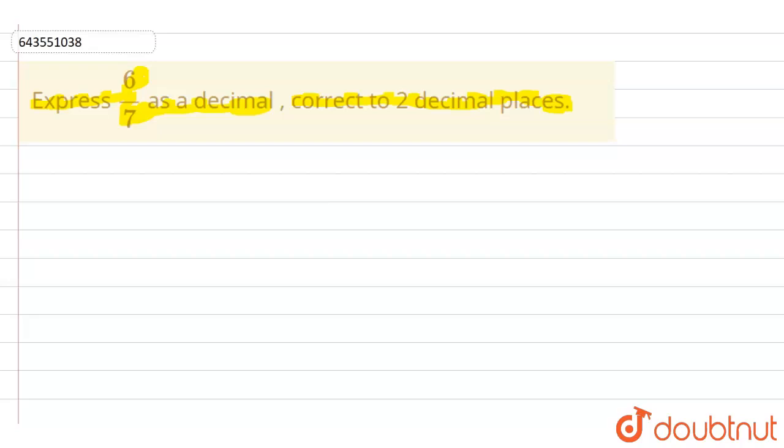So basically in this question we have to express 6 upon 7 as a decimal and there is a condition that we have to express correct to two decimal places. Correct to two decimal places means that there should be only two digits after the decimal.